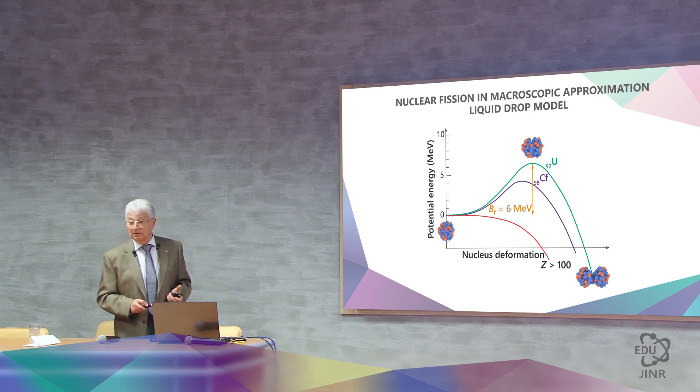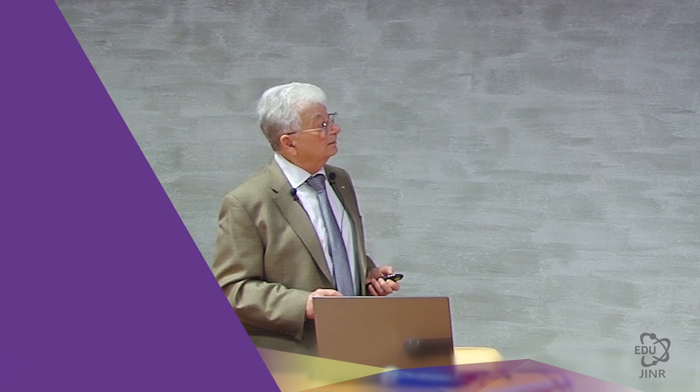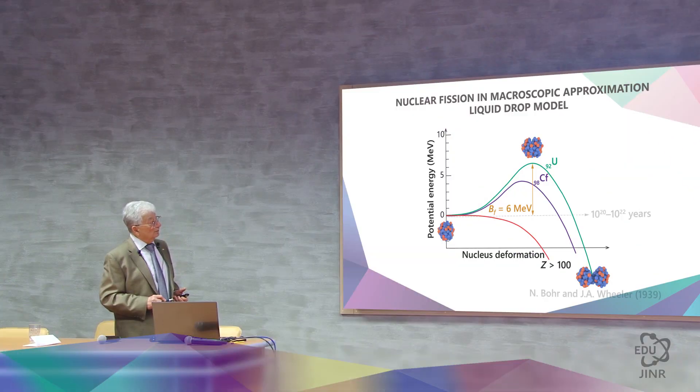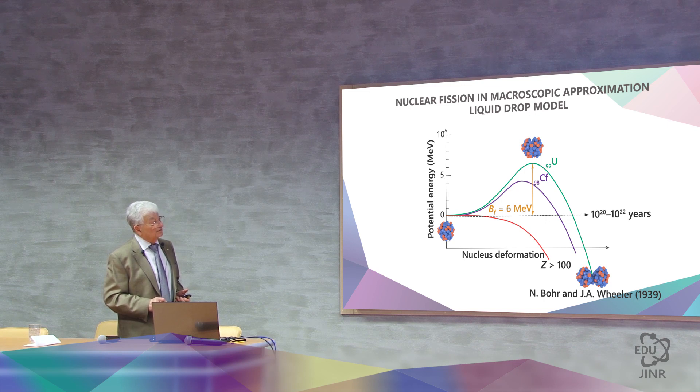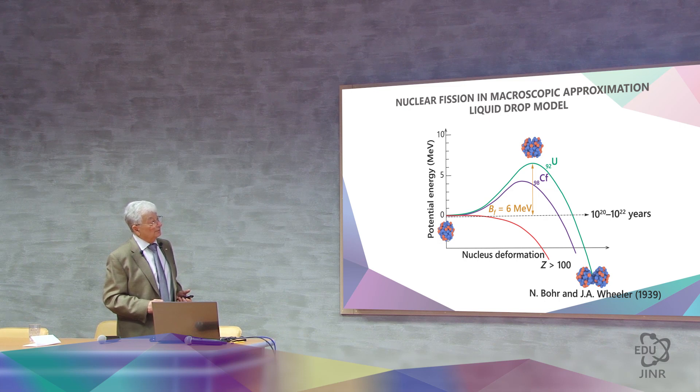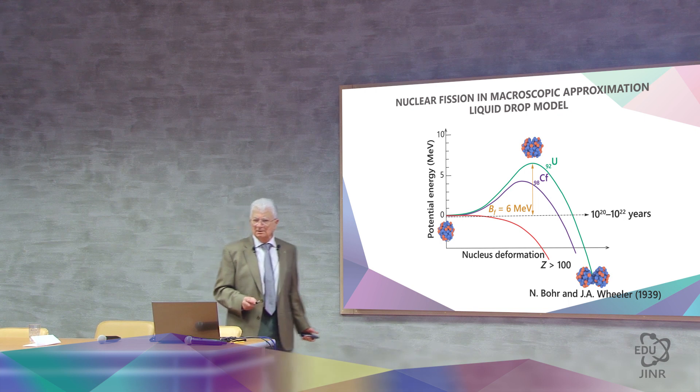For uranium, this is 6 mega electron volt. If 6 mega electron volt of energy is introduced into the nucleus, it will divide. If less energy is introduced, nothing will happen. Why is that? Because the probability will be very small. Bohr and Wheeler considered that it could tunnel through this barrier, as we saw with alpha particles, only now it will be in fragments. But it will take 10 to the power of 20 to 10 to the power of 22 years.